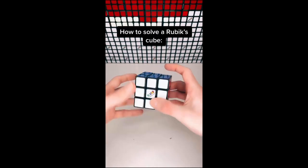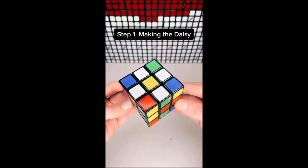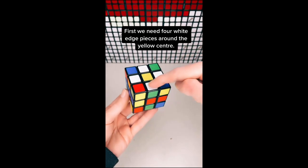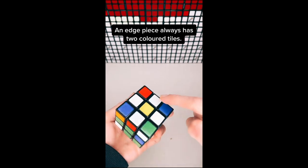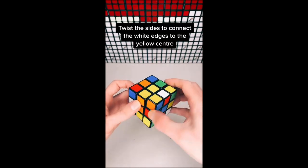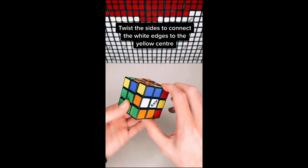How to solve a Rubik's Cube. Step 1: Making the daisy. First, we need four white edge pieces around the yellow center. An edge piece always has two colored tiles. Twist the sides to connect the white edges to the yellow center.